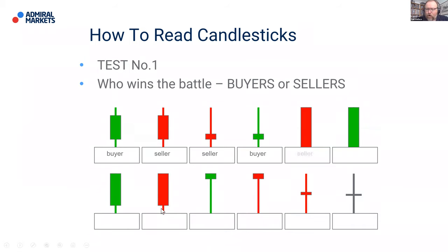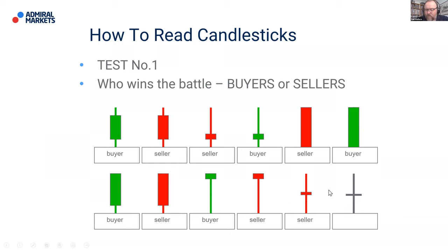We can see the next candle is a very strong bearish candle — we've closed lower than we opened, so the sellers are in control. The following candle, we close higher than we opened, so the buyers are in control. Going through more examples: bottom left is a buyer candle, the next is a seller, the one after is a buyer. And what about the last one? That's actually a draw — the closing price is the same as the opening price, sometimes called a doji candle, high wave candle, or spinning top. For now, we're not focused on labels — just on who is in control.